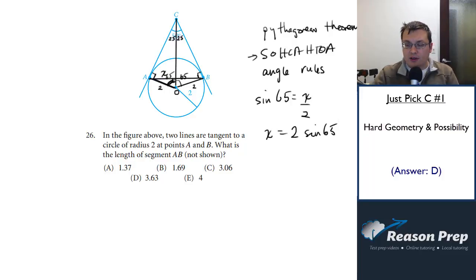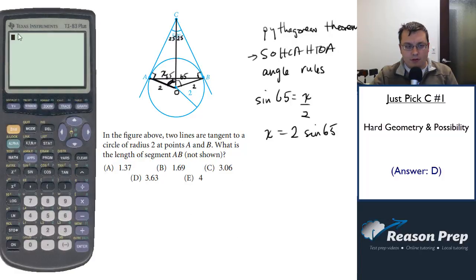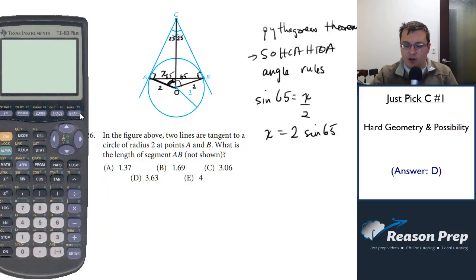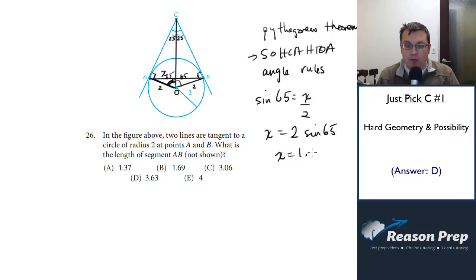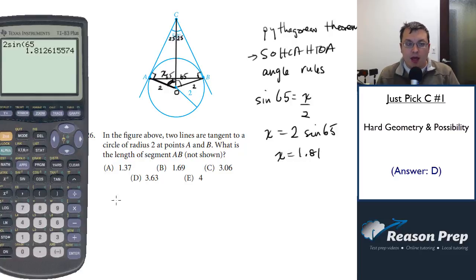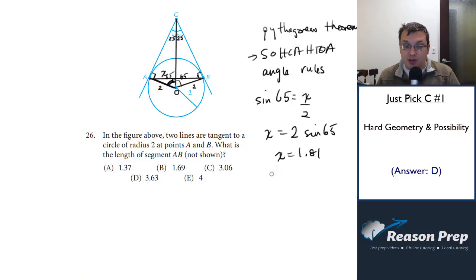Let's pull out the calculator. So we have 2 times the sine of 65 gets me 1.81, 1.81 something. But I want the whole side AB, so I'm going to double this so I can get the whole thing, not just one piece of it. And I get 3.63, and that's choice D, and that's the answer.